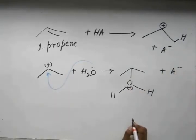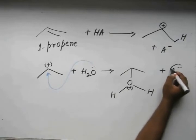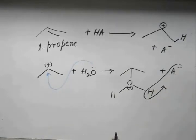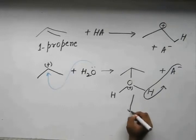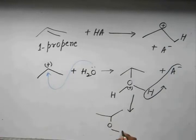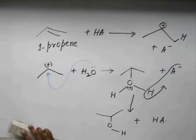What do we get? The conjugate base of the acid now extracts one H plus, so now we are left with the alcohol and the acid is rejuvenated. As simple as that.